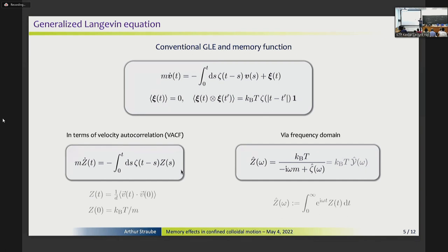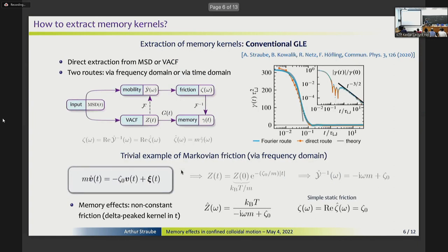Then there is a relation between the velocity correlation function and this memory kernel written in the frequency space. And this formula, this simple formula, without going into the deep math, you can consider as the definition of memory. So what you have here can be called memory for conventional underdamped system. And this is what we basically do.